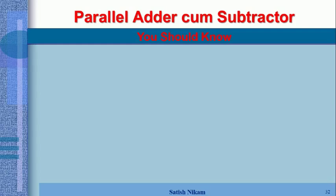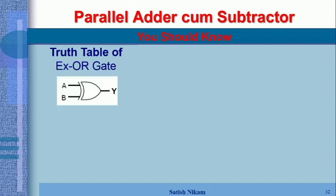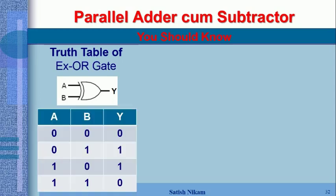You must know the truth table and symbol of the XOR gate. The symbol of the XOR gate has inputs A and B and output Y. Since there are two inputs, there are four possible combinations: 0-0, 0-1, 1-0, and 1-1, giving outputs 0, 1, 1, 0 respectively.